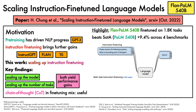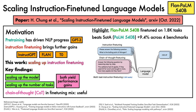It is also fine-tuned on chain-of-thought instruction data. This includes instructions like "answer the following question by reasoning step-by-step: the cafeteria had 23 apples. If they used 20 for lunch and bought 6 more, how many apples do they have?" The model must then supply the answer: the cafeteria had 23 apples originally, they used 20 to make lunch, so they had 23 minus 20 equals 3. They bought 6 more apples, so they have 3 plus 6 equals 9.